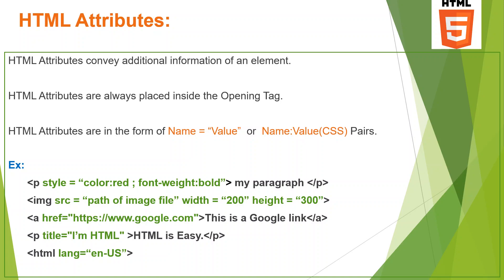Welcome to the TSS. In this class we will discuss HTML attributes. Attributes are special additional information — special instructions to the browser — in addition to the basic tags. For example, the paragraph tag instructs the browser to display the text as a paragraph inside the screen. That is the basic functionality of the paragraph tag.